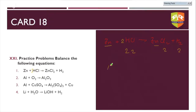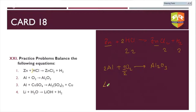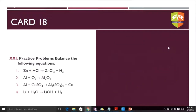Al + O₂ → Al₂O₃: put 2 before Al; there are two oxygens on the left and three on the right — need 3/2, which is fractional. So multiply the entire equation by two: 4Al + 3O₂ → 2Al₂O₃. Check: four aluminium each side ✓; six oxygens each side ✓. This is a balanced reaction.